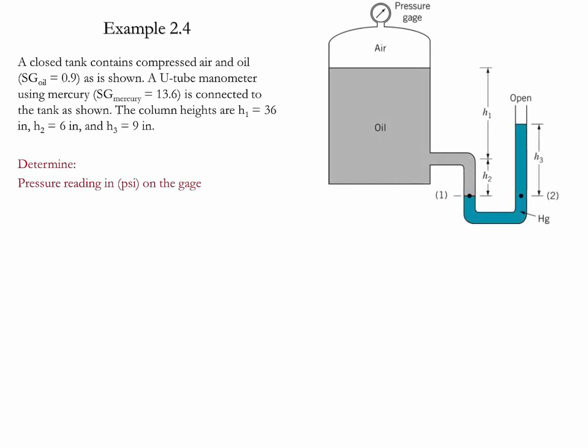Example 2.4. In this example we have a closed tank which contains compressed air and oil. This tank is connected to a U-tube manometer using mercury and is exposed to the atmosphere.